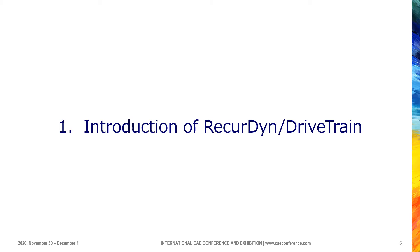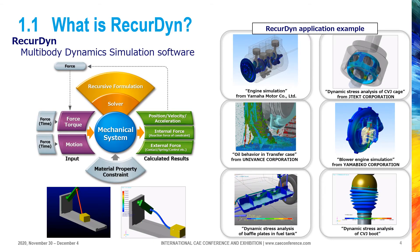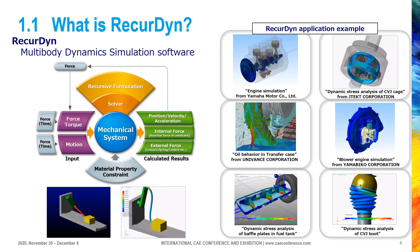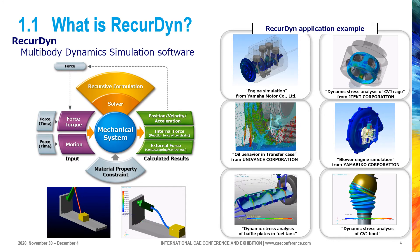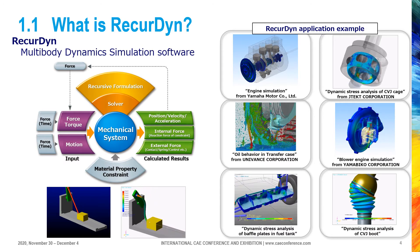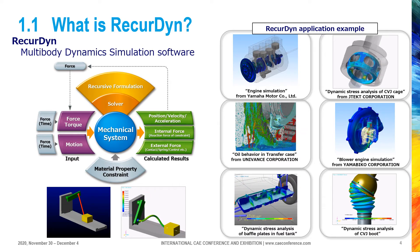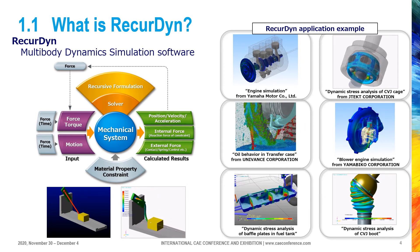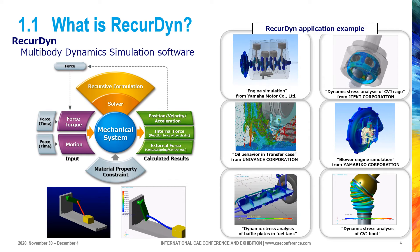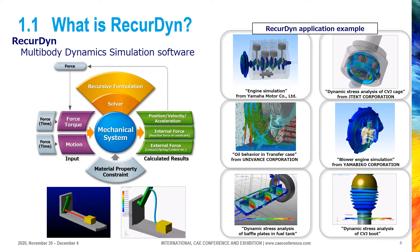I'd like to start talking about an introduction of Ricardine drivetrain solution, which makes it possible to simulate drivetrain systems reasonably in the general-purpose multi-body dynamics software Ricardine. Multi-body dynamics is a simulation method that calculates dynamic behavior of a mechanical system in time domain considering forces applied on multiple bodies. Ricardine has been used widely in various industrial fields including automobiles, construction machines, printing machines, home electric appliance products, and precision instruments.